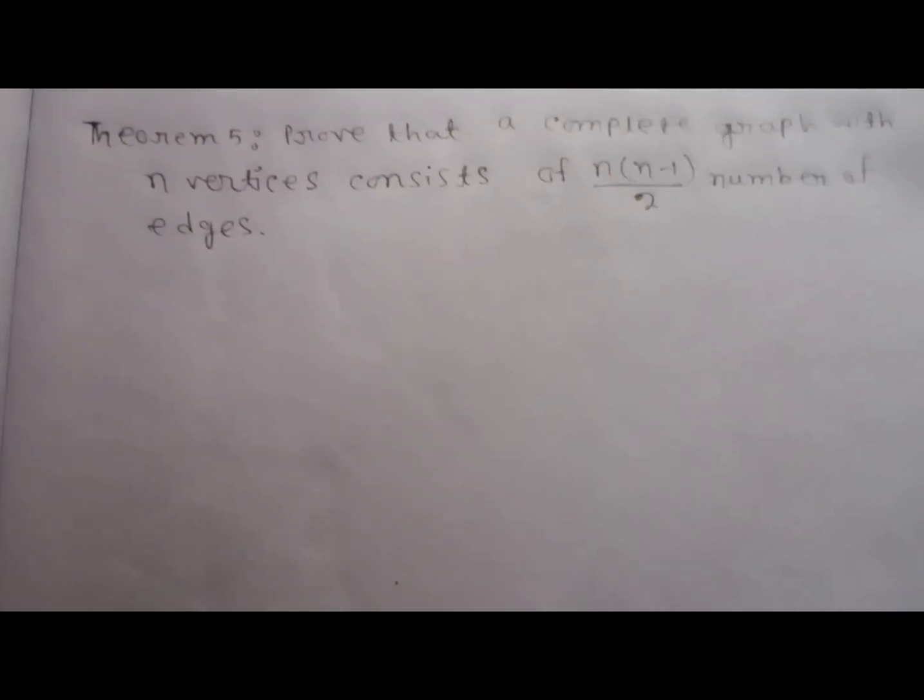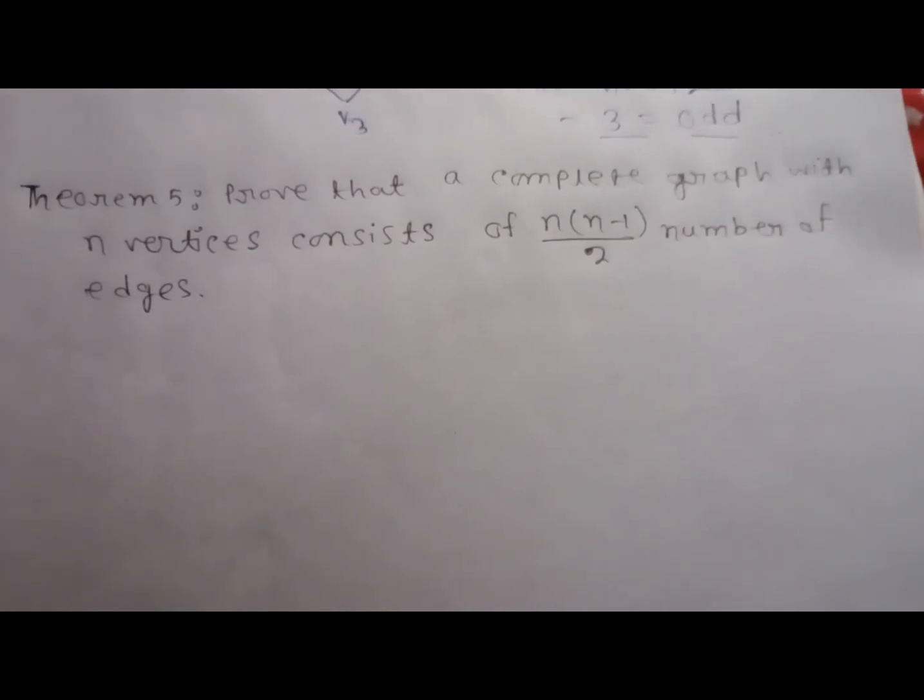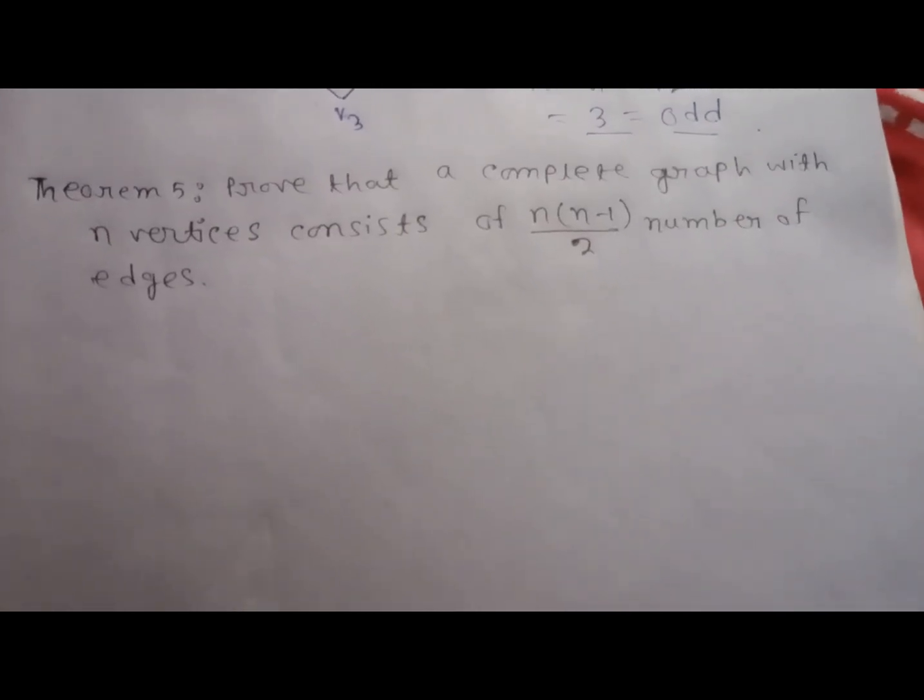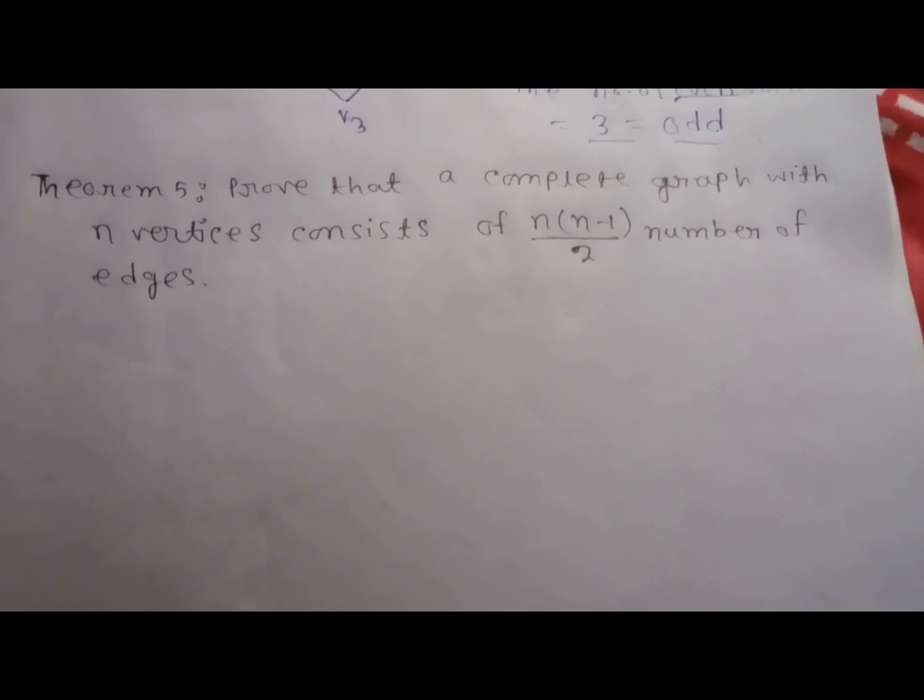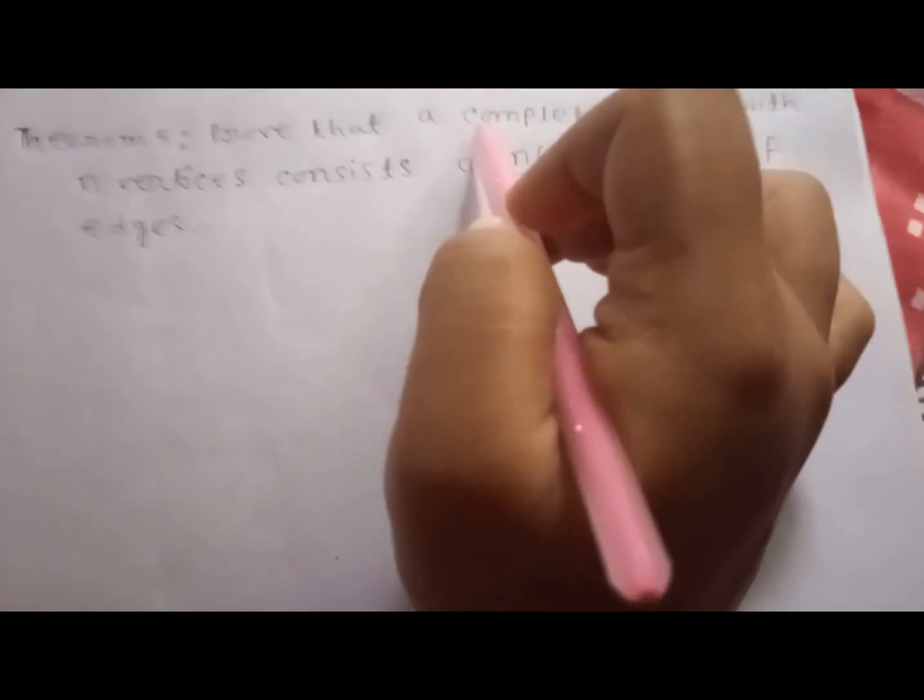Theorem 5: Prove that a complete graph with n vertices consists of n into n minus 1 by 2 number of edges. What is a complete graph? A simple graph is said to be complete if each vertex is connected to every other vertex.